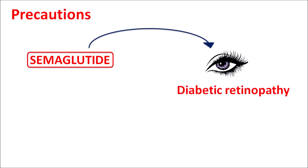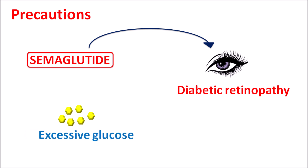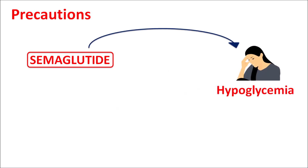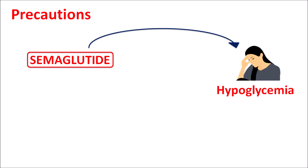Semaglutide can increase the risk of diabetic retinopathy. Normally, excessive glucose levels may result in diabetic retinopathy, and semaglutide can further increase this risk even though it reduces glucose levels. Therefore, in diabetic patients who have already developed diabetic retinopathy, this drug should not be used.